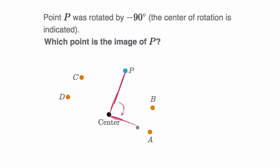And so it would look like that. And it looks like it is getting us right to point A. So this is a negative 90 degree rotation right over here. Gets us to point A.